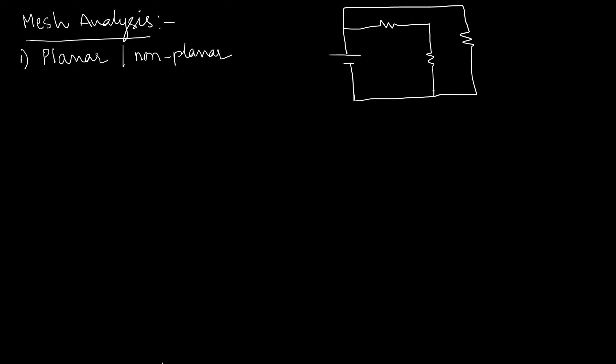Let us add one more resistor, and name the resistances R1 and R2, with nodes X and Y. A crossover means R1 is not having any interaction with R2 but is connected between X and Y. So if we observe any crossover, we can treat that particular network as non-planar. Now observe and tell me whether this network is planar or non-planar.